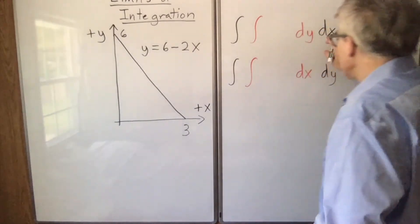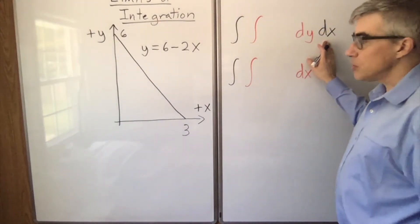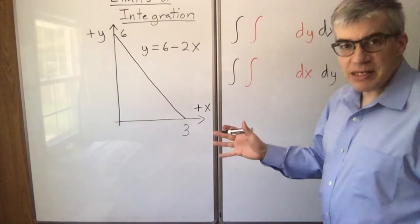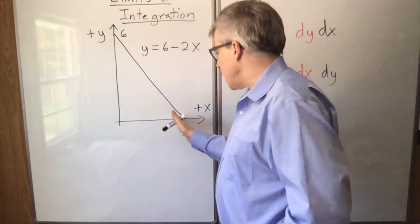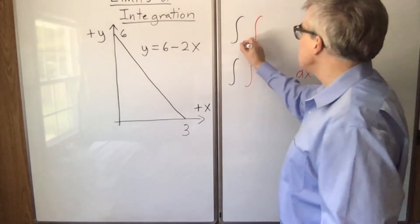Now suppose we're first going to use x as the outer integral. The outer integral has the easiest limits. You just get numbers. The lowest value of x is 0, the highest is 3, so this is 0 to 3.